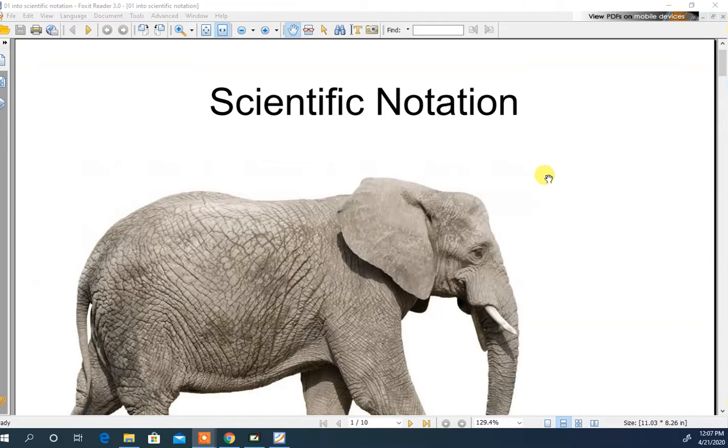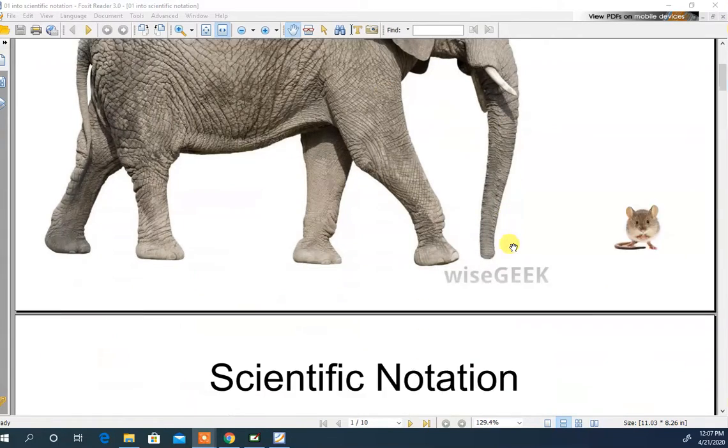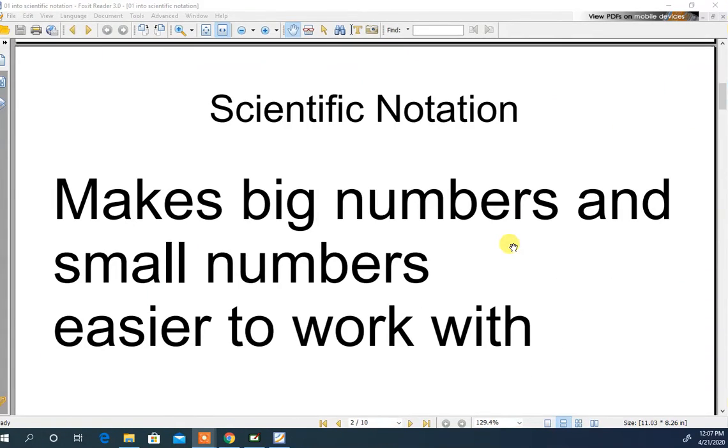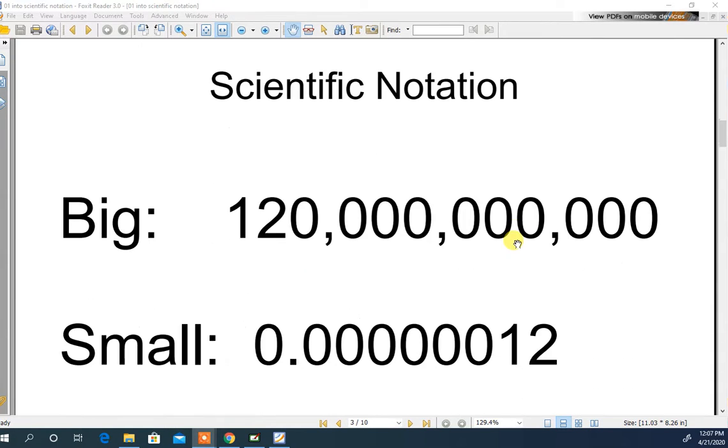So, scientific notation, we've already talked about this, it works with big things and big numbers and little numbers, so scientific notation makes big numbers and small numbers easier to work with. Here's an example of a big number, here's an example of a small number.